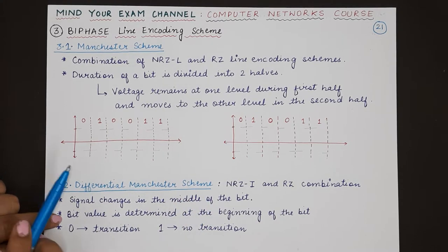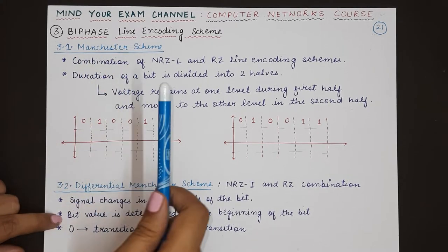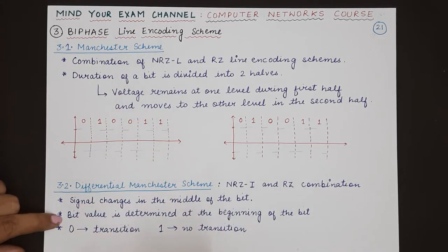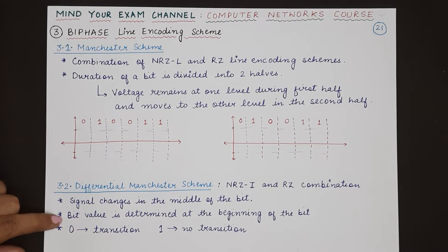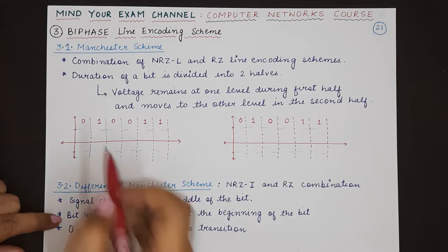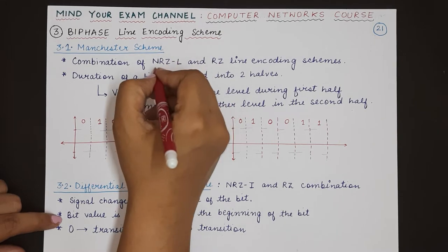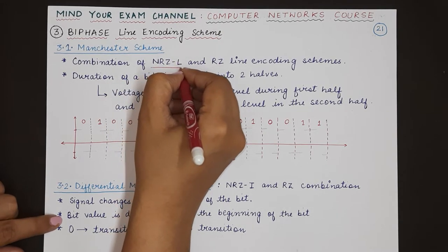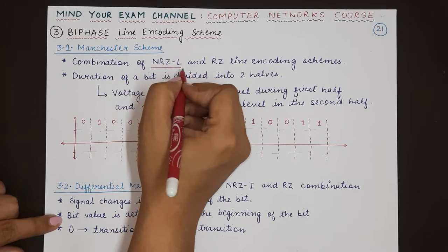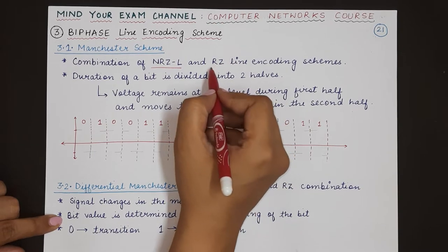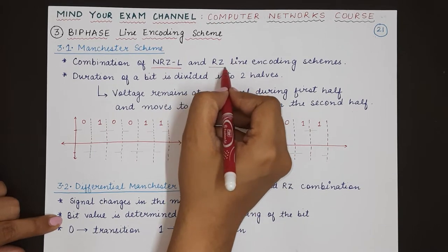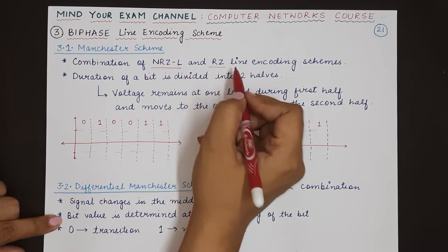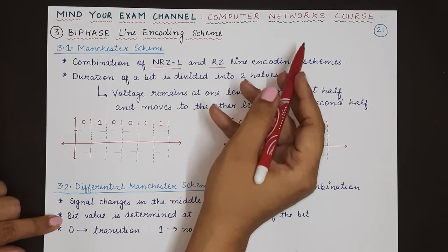Now let's understand what the Manchester scheme is. The Manchester biphase line coding scheme is basically a combination of non-return to zero level (NRZ-L) and RZ. RZ means return to zero line coding scheme.